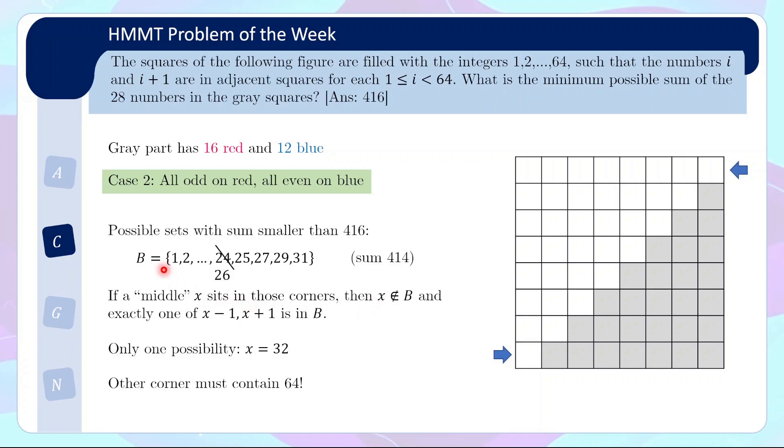This same logic applies for the set B. So if you look at B, again if a middle number sits in a corner, one of these two corners, then it doesn't belong to B and exactly one of its plus minus 1 numbers is in B. So again, looking at this very carefully, 24 still doesn't fit because both 23 and 25 are inside the set. So again, thinking through, only 32 works, which means the other corner must contain 64.